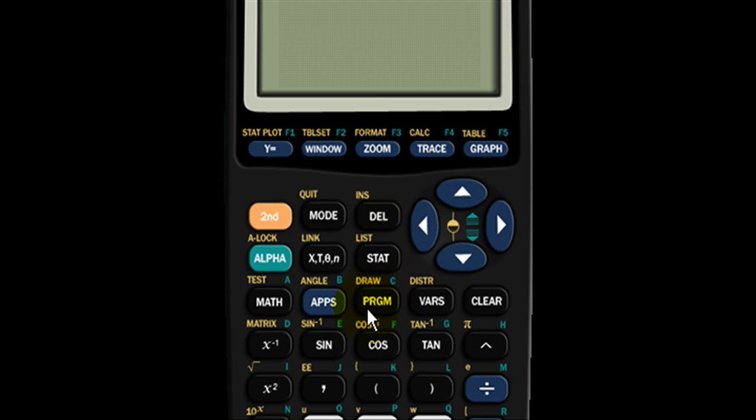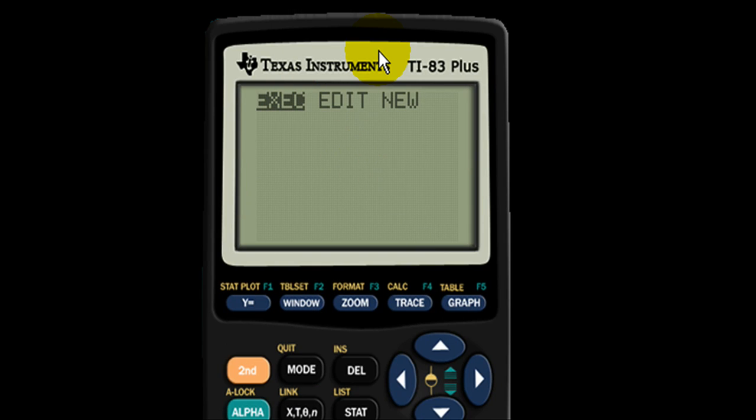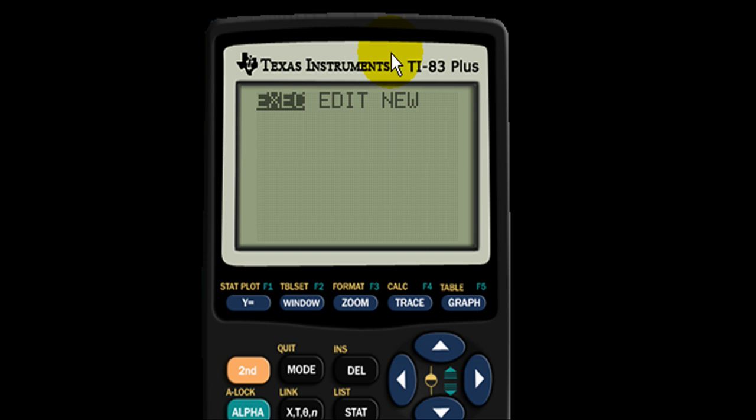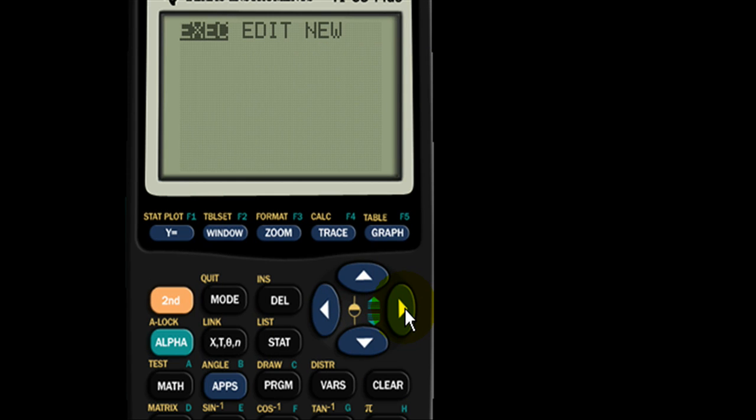We're going to click the program button right now and this is what shows up when you hit the program button. This is where you store the information that you want to read later on. So we're going to go to new by clicking the right arrow key twice.